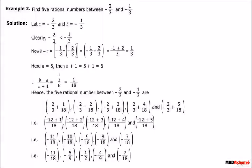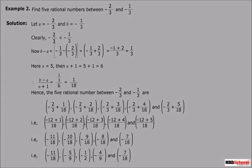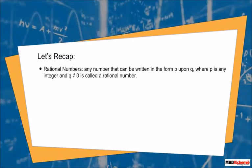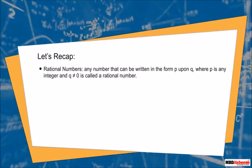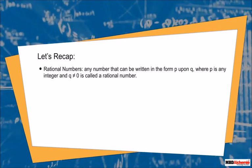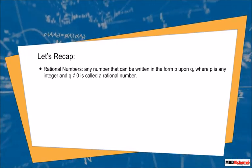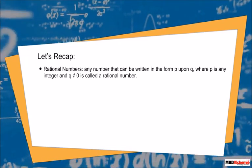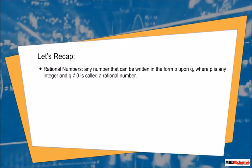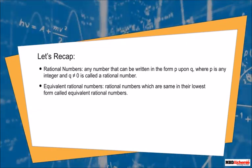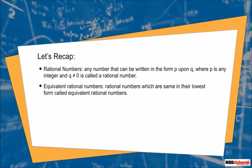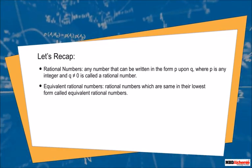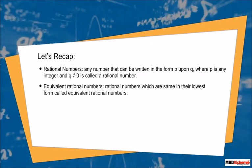Let's recap. Rational numbers: any number that can be written in the form P upon Q, where P is any integer and Q is not equal to zero, is called a rational number. Equivalent rational numbers: rational numbers which are the same in their lowest form are called equivalent rational numbers. Between two rational numbers there are infinitely many rational numbers.